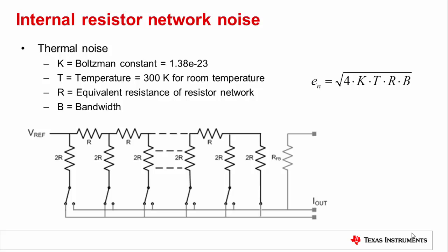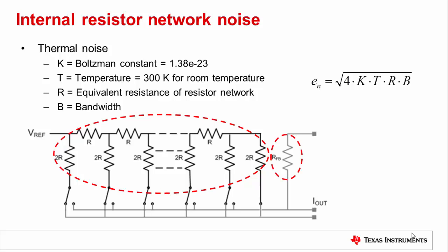One subtle but important note is that there are two resistances of interest here. First, there is the equivalent resistance from the resistor network, which is code-dependent. Second, you have the feedback resistor, which is used in combination with an output amplifier to create an output voltage. When the DAC is in a gain of minus one, the value of the feedback resistor is equal to the DAC resistor network at full scale. Both of these resistances need to be accounted for when calculating the thermal resistor noise of this system.